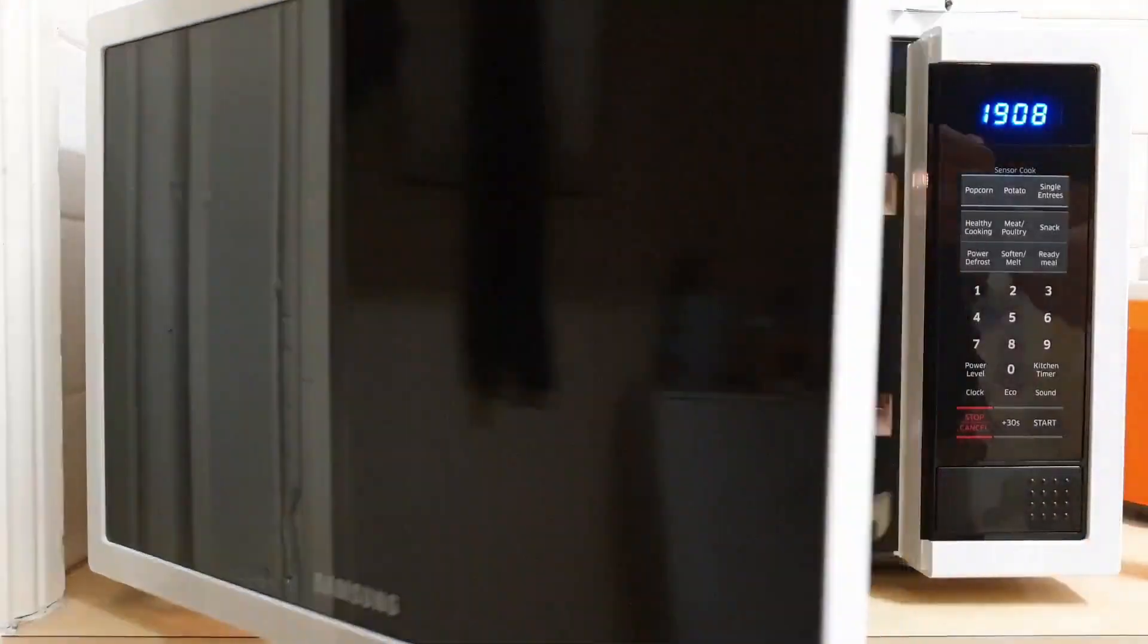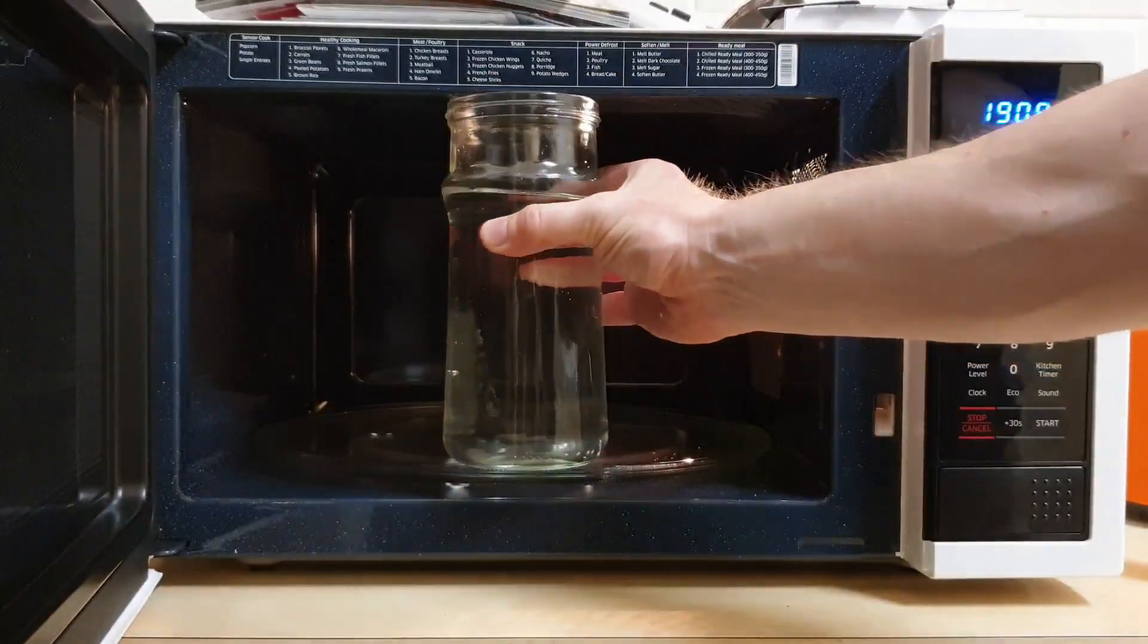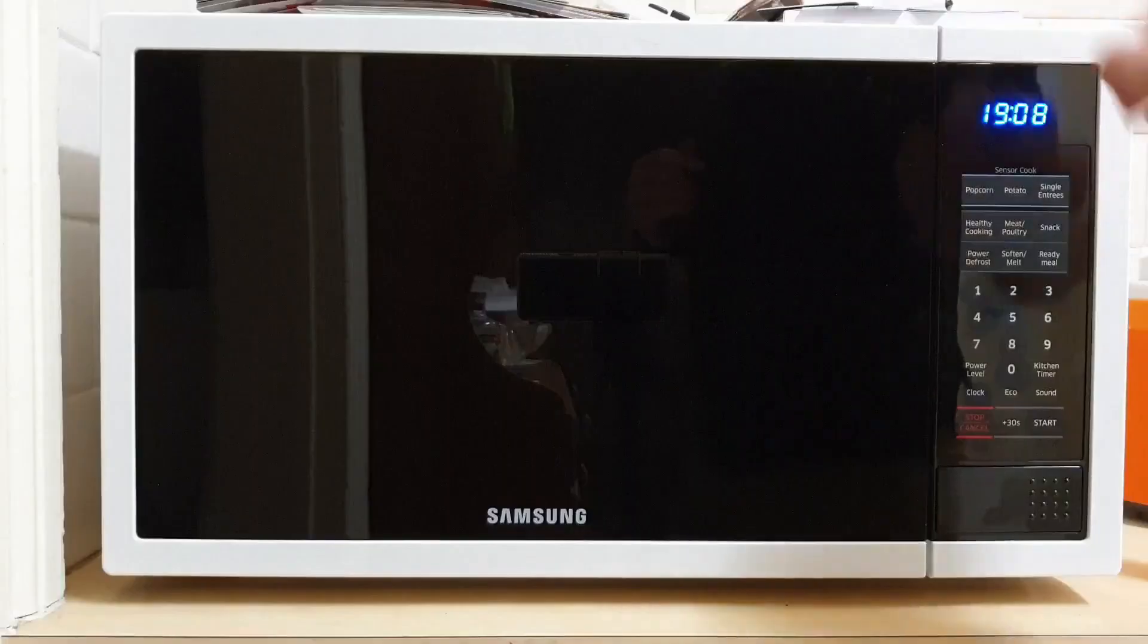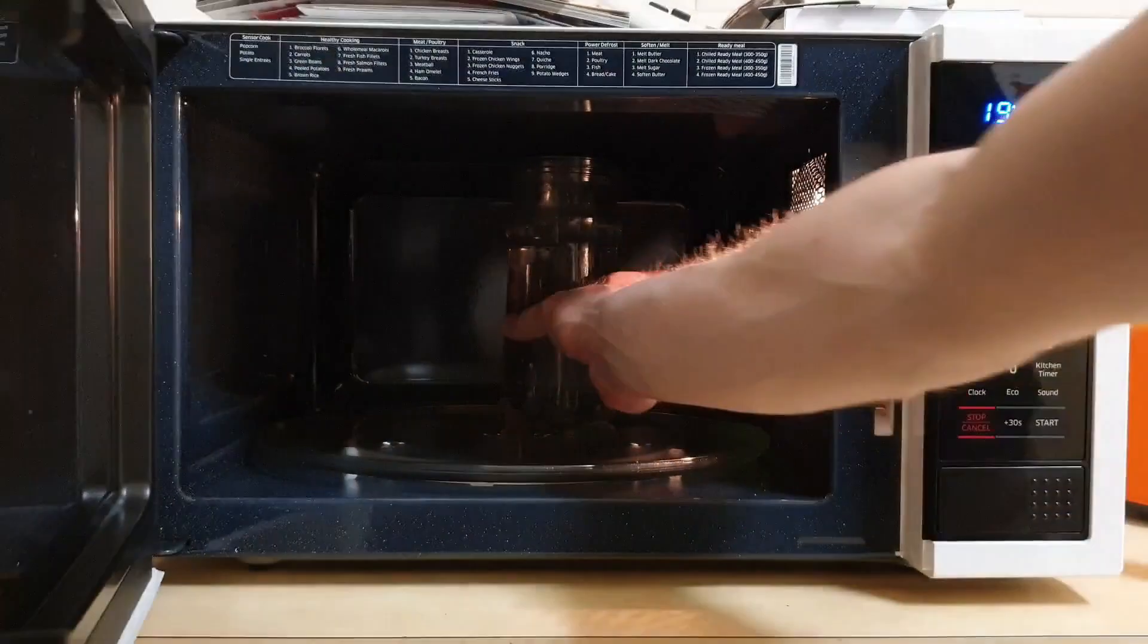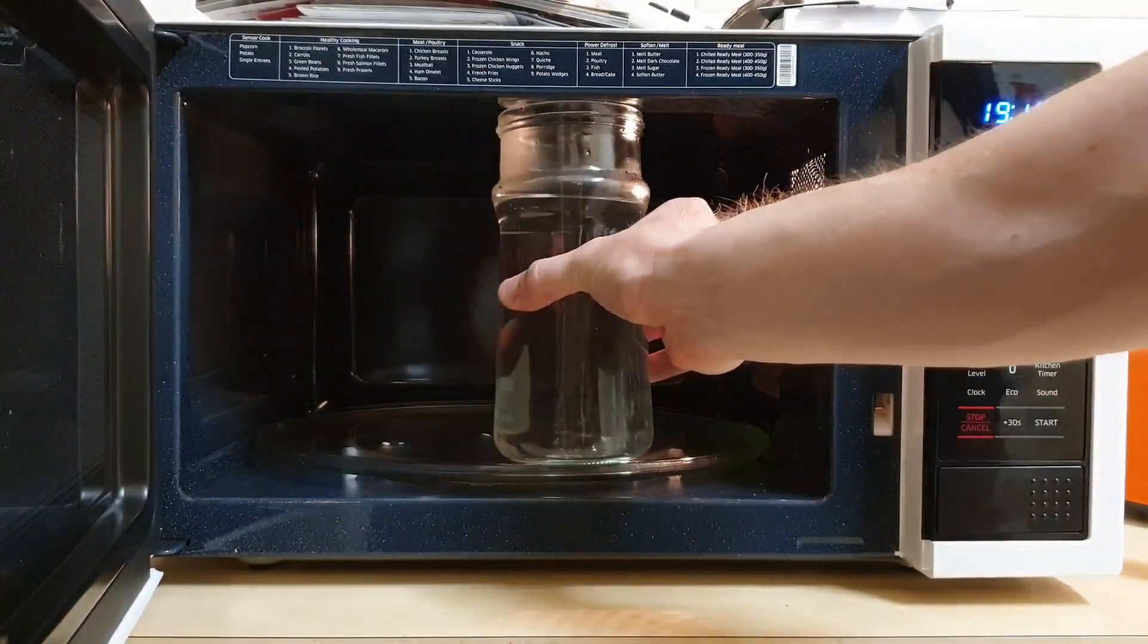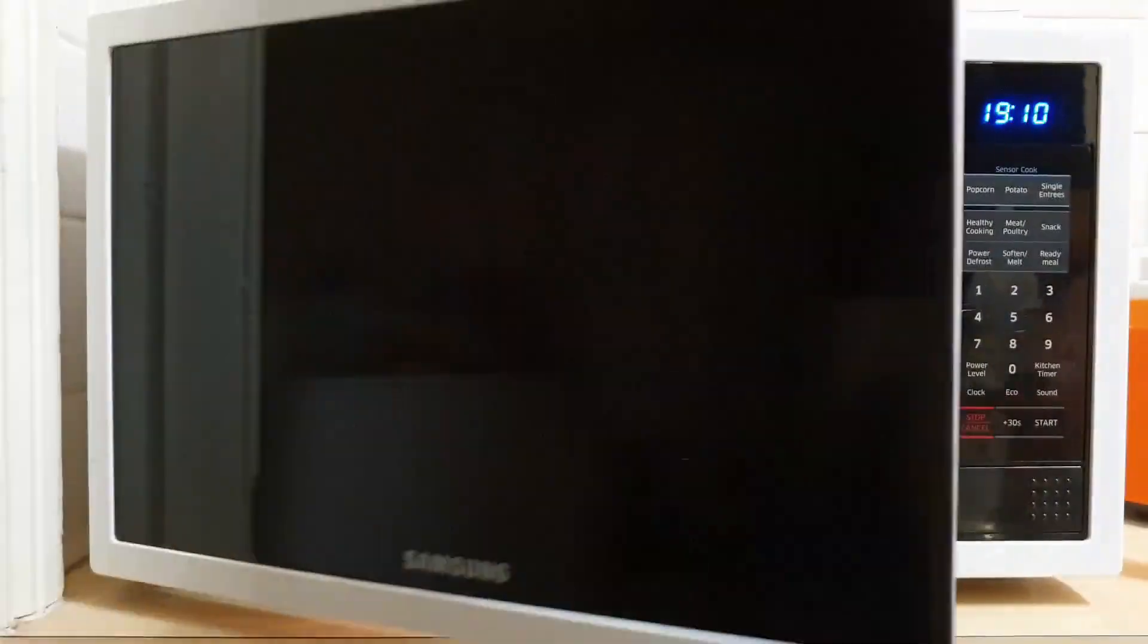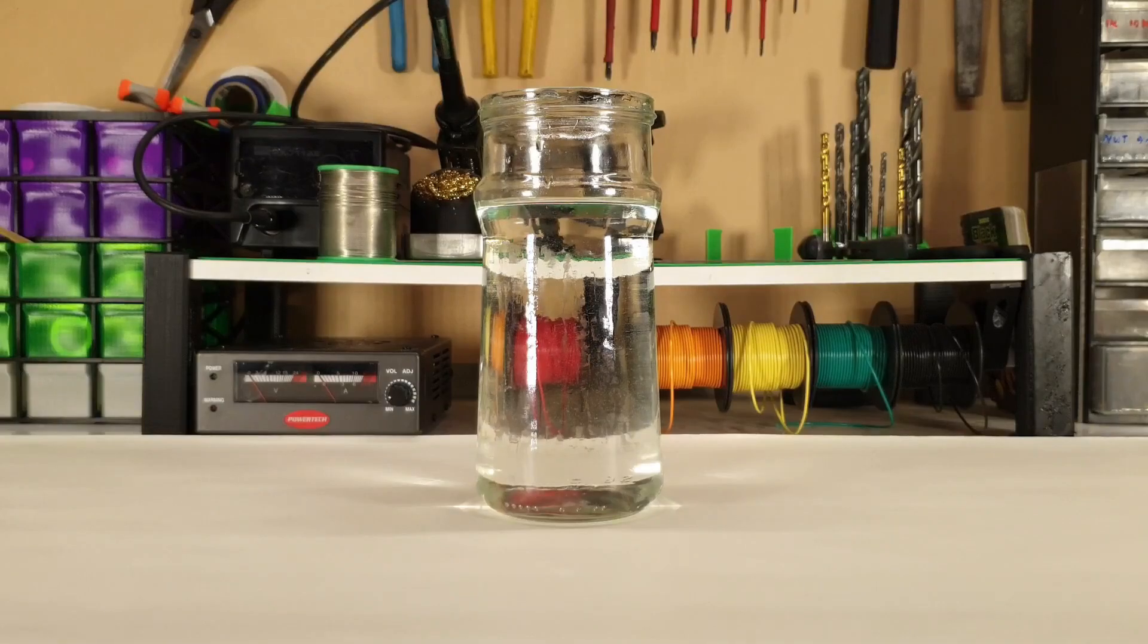In your microwave safe container, mix roughly 50% vinegar with 50% hydrogen peroxide. Then we'll microwave it till it's roughly 40 degrees Celsius, or 105 degrees Fahrenheit, which is about the temperature of a really hot bath.